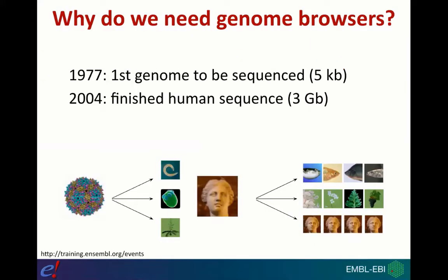Genome browsers are very important — they provide scientists with a way of interacting with and retrieving data from the genome, annotated with many different data types across different species. The first organism to have its genome sequenced was a bacteriophage. Back in the 1970s, Fred Sanger and his team in Cambridge sequenced a bacteriophage with a genome of just five kilobases. That technology laid the foundations for sequencing increasingly complex organisms, until in the early 2000s we had the first draft of the human genome sequence, which is three gigabases in size.